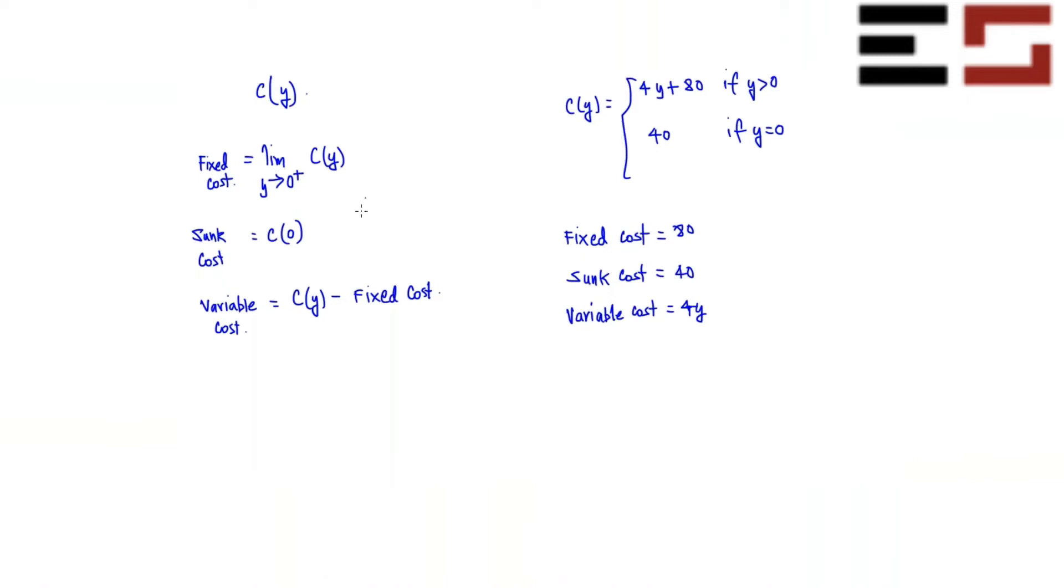So you know the idea behind, what is the difference between the sunk cost and the fixed cost? Sunk cost is something that you can imagine a scenario where you have already incurred some cost to get the licenses to run the factory.